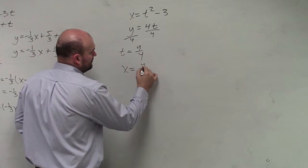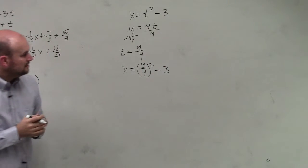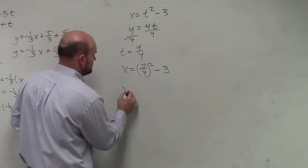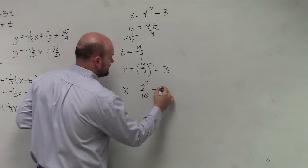x equals y over 4 squared minus 3. So y over 4 squared is y over 4 times y over 4, which is y squared over 16 minus 3.